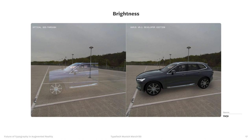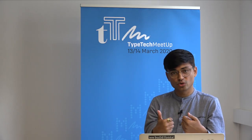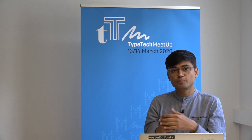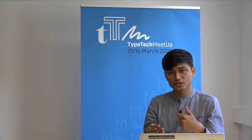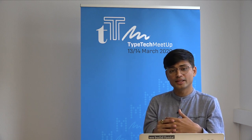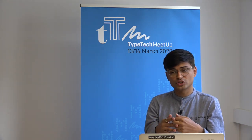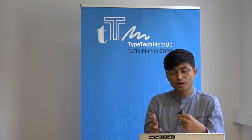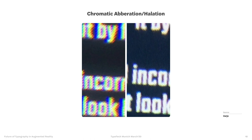Brightness is another challenge. In optical see-through devices, brightness can't reach a very realistic level, making things appear semi-transparent. This affects typeface weight selection — if brightness is low, using regular versus bold weight has distinct consequences. You have to solve for how readable the text in front of the user actually is, which depends heavily on weight.